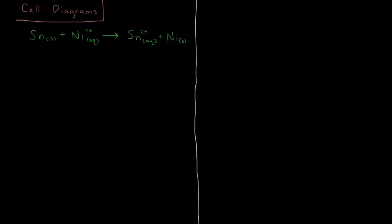In this video we're going to look at how cell diagrams can provide a compact representation of what's going on in an electrochemical cell. Starting off with our reaction that we've been using as an example throughout this series, we have tin reacting with aqueous nickel ions forming aqueous tin ions and nickel solid.